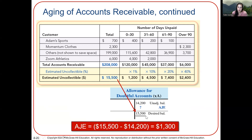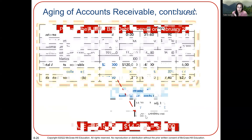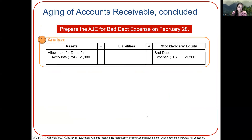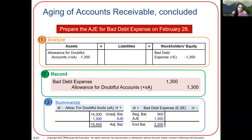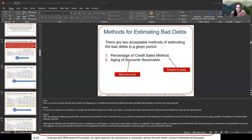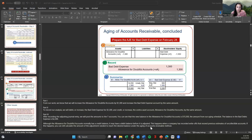We're going to use that same journal entry we've used before: debit bad debt expense and credit allowance for doubtful accounts. Our adjusting journal entry increases bad debt expense. Let's do that entry and do a calculation — I'll pull up my in-class assignment.